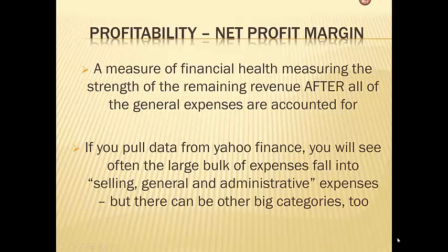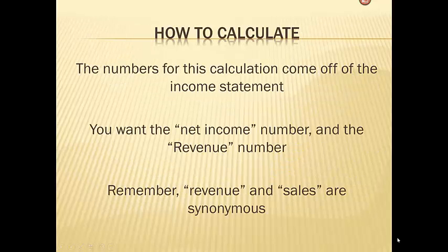If you pull data from Yahoo Finance on any company you will see that often a large bulk of expenses will fall into a category called selling, general and administrative expense. There can be other big categories too, but this tends to be the biggest one. The numbers for this calculation will come off the income statement and we will use revenue or sales, similar to what we've done with the gross profit margin, and we also now will take the net income number.